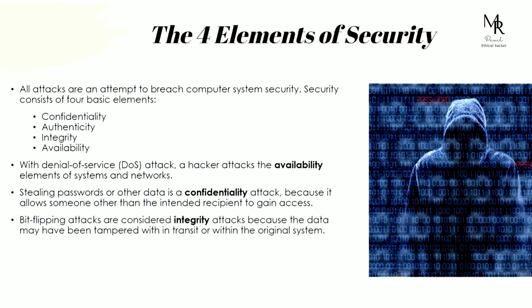Bit flipping attacks are considered integrity attacks because the data may have been tampered with in transit or within the original system. For example, if someone sends an important document with a digital signature, an attacker can come in and modify that document — changing the numbers. If it's an invoice or promissory note, they could change 'you owe us ten dollars' to 'you owe us ten thousand dollars.' That's how information can be manipulated — that's the integrity element.